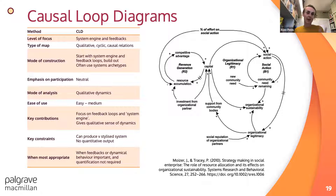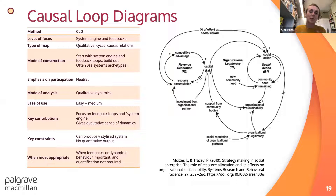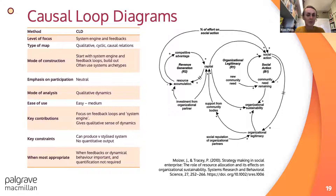Many of you will have seen causal loop diagrams — the first of our true network methods, widely used in government and elsewhere. We have a set of variables and connections focusing on feedbacks between variables. This is a great method when the core problem is about the types of dynamical behaviour a system might have. It's qualitative but gives a sense of the qualitative dynamics a system might express. Although it's quite simple-looking, it takes a lot of expertise and experience — there's quite a craft to using it well.